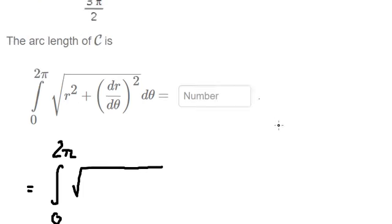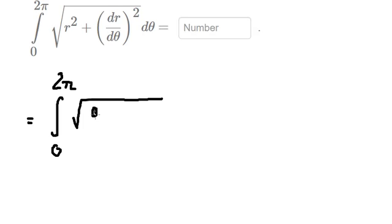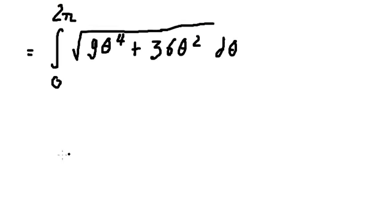Squaring those terms, we have 9θ⁴ for r², and 36θ² for (dr/dθ)². Now we can do factorization by 9θ².